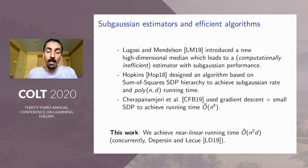So in order to address this issue, Hopkins designed an algorithm based on the sum of squares semidefinite programming hierarchy to achieve a sub-Gaussian rate in time polynomial in n and d. So here the polynomial running time is something like n to some large unspecified constant. So Cherapanam and Jerry et al. in follow-up work used some kind of gradient descent plus a small semidefinite program that appeared as a subroutine in this Hopkins paper to achieve an improved running time of roughly n^4.